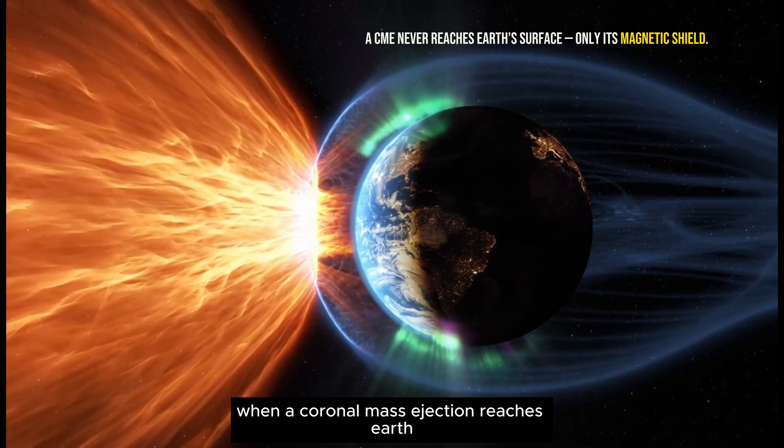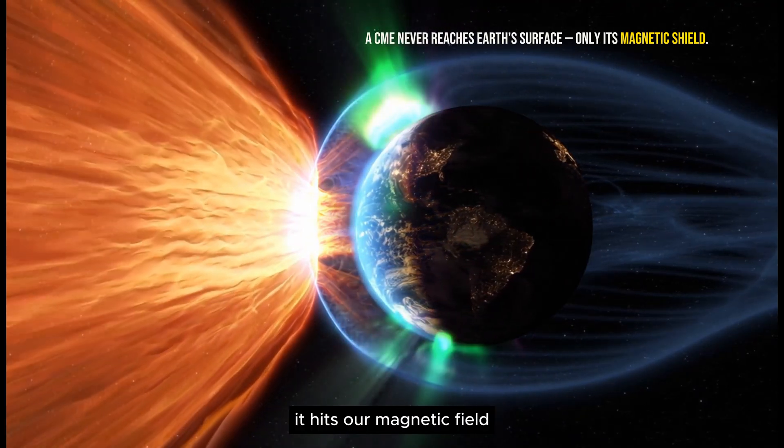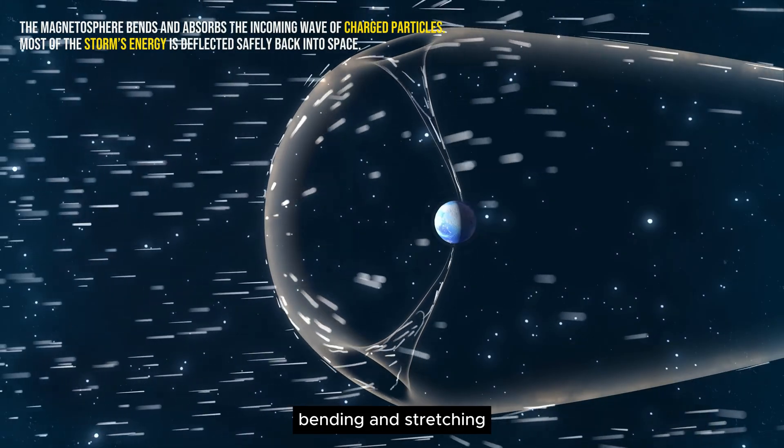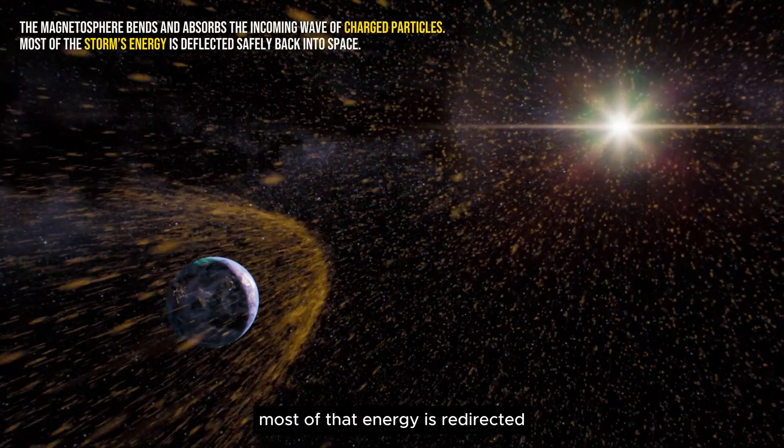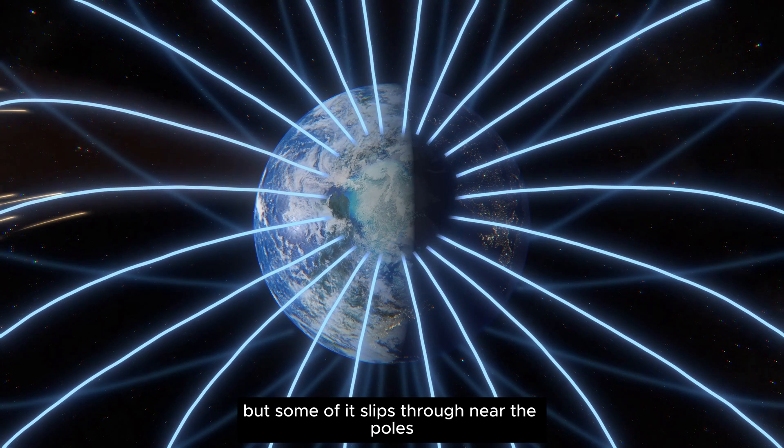When a coronal mass ejection reaches Earth, it doesn't hit the surface. It hits our magnetic field. The magnetosphere acts like a shield, bending and stretching as the incoming particles push against it. Most of that energy is redirected safely back into space. But some of it slips through near the poles,